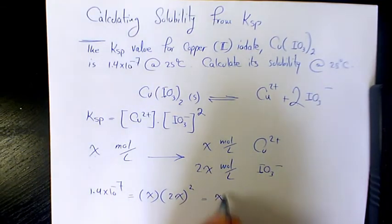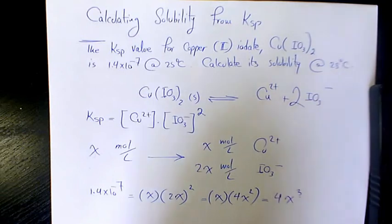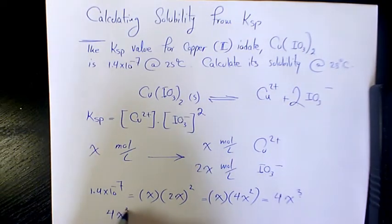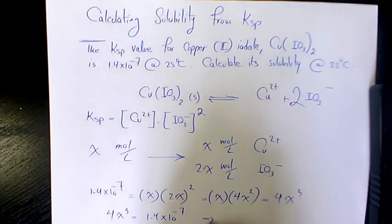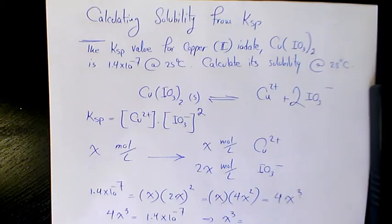So that's going to be x times 4x², which will be 4x³ when you multiply. So 4x³ will equal 1.4×10^-7. So x³ will be 1.4×10^-7 divided by 4.